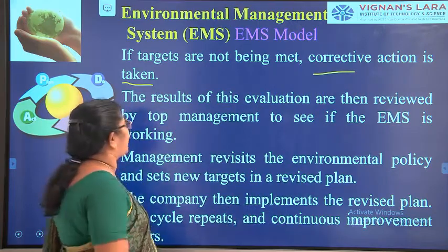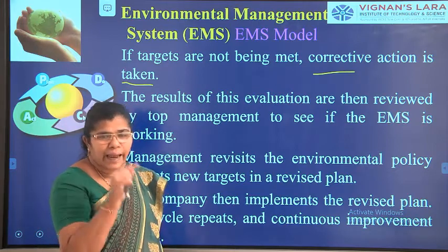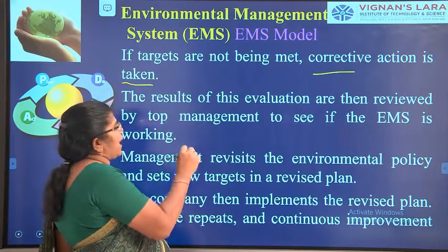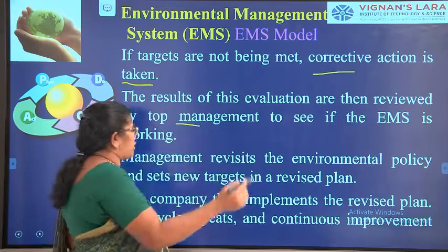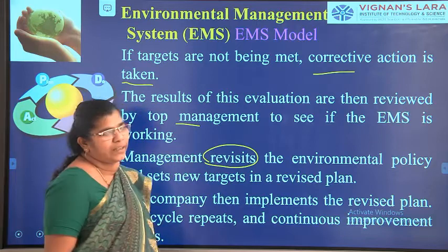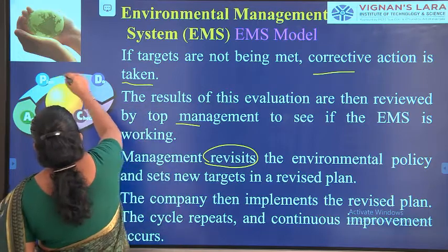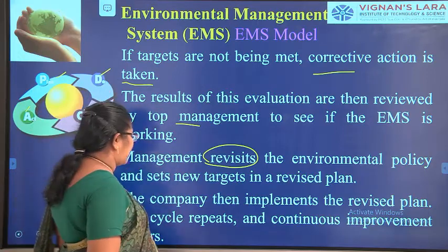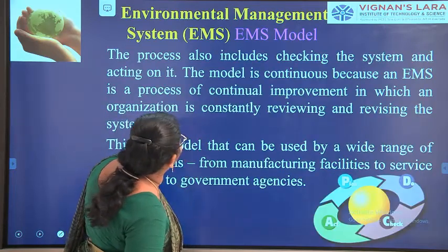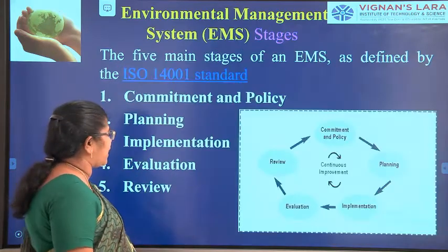After checking, we go for the last step: Act. I have to review whether the EMS is working and revisit the environmental policy to check whether everything is going as planned. Plan, Do, Check, and Act — these are the things to follow in the PDCA cycle.